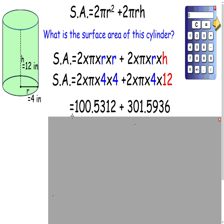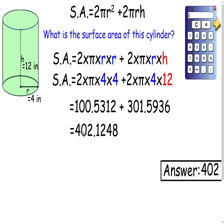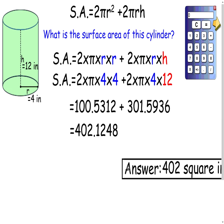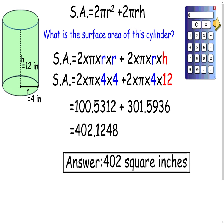And when you do this on the calculator, you'll get, for the two circles, about 100, and for the rectangle, about 300. You add them together, and you end up with 402.1248. We're going to round to the nearest whole number, so that's going to be 402 square inches. Remember, surface area is an area, so your units are going to be inches or feet or yards squared, so units squared.